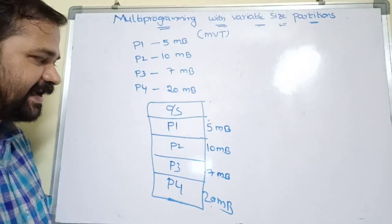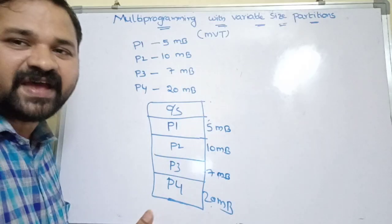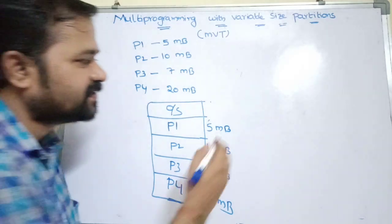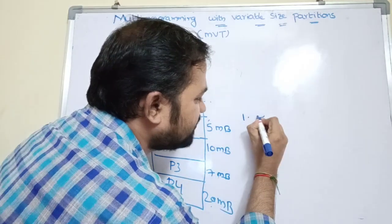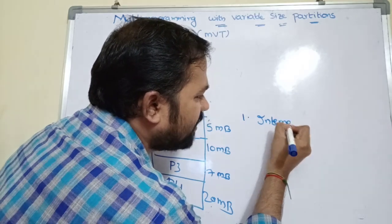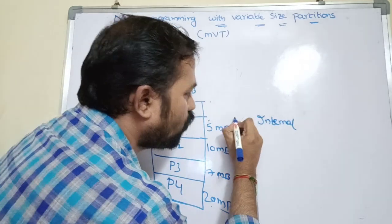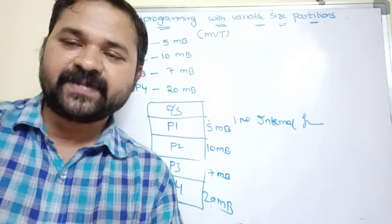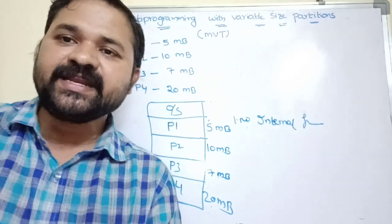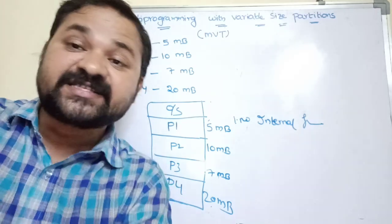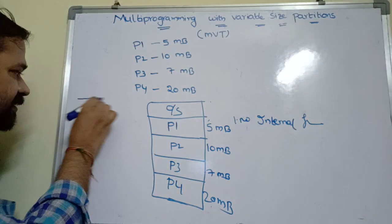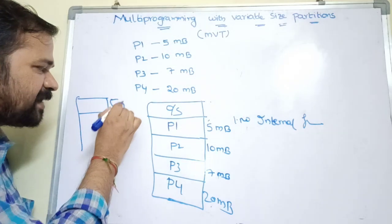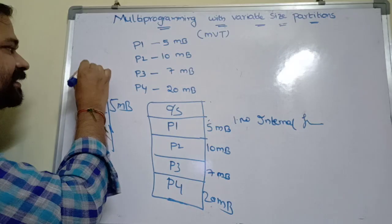Let's see the advantages of this approach. The first advantage is there is no internal fragmentation. Internal fragmentation occurs in multiprogramming with fixed size partitions — in that technique, the size of a partition is fixed. For example, if the partition size is 5 MB but the process size is only 3 MB, then 2 MB is wasted.